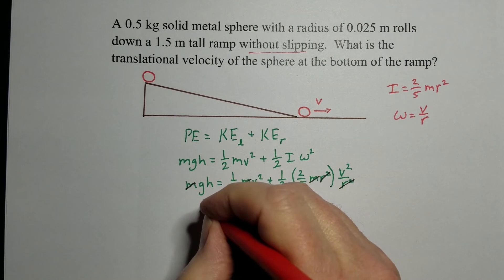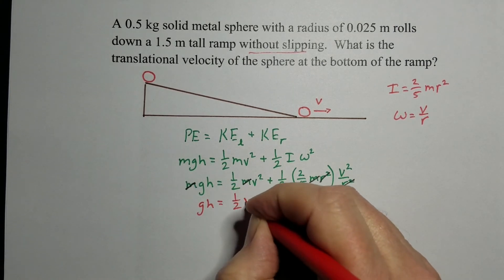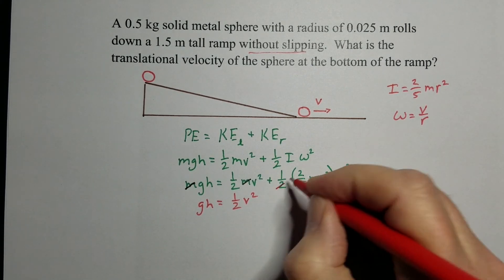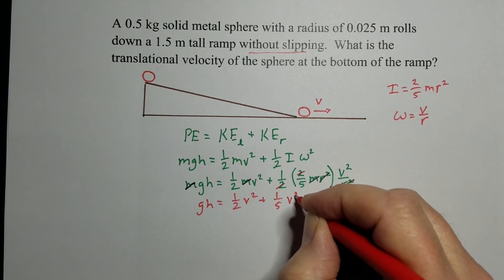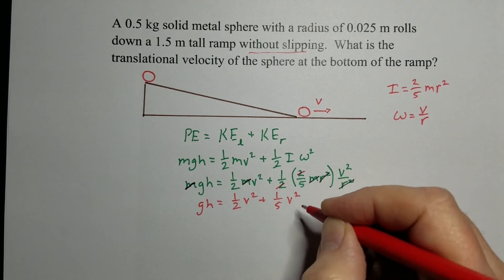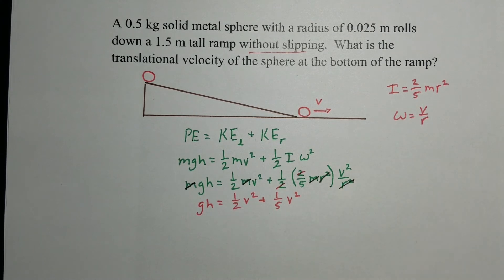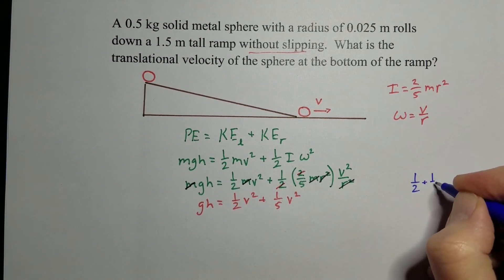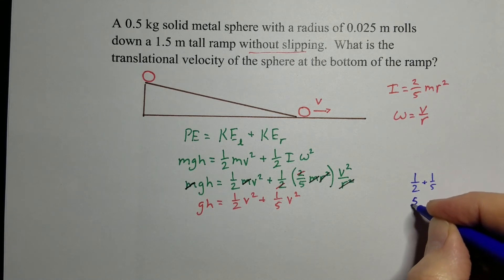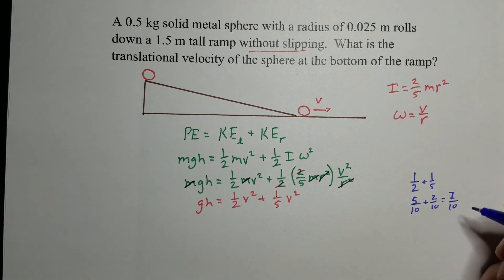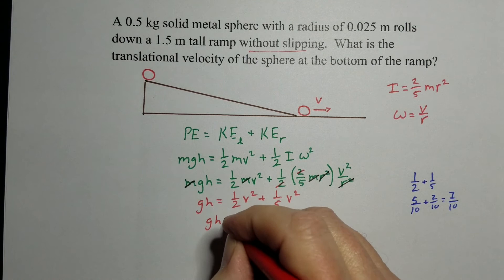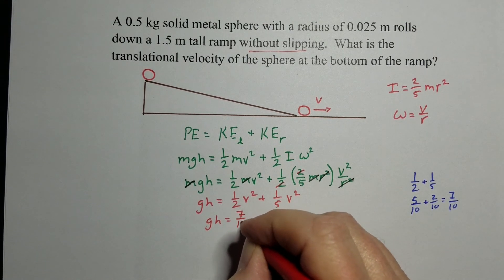So we get gh equals one-half v squared. If we look again, this two and that two cancel out. So we get one-fifth v squared. Add those two up. I want to do it as a little side. We'll do it the old-school way. So one-half plus one-fifth. Least common denominator is 10. So this would be 5 over 10 plus 2 over 10. That's 7 over 10. Let's move that back over. So gh equals seven-tenths v squared.